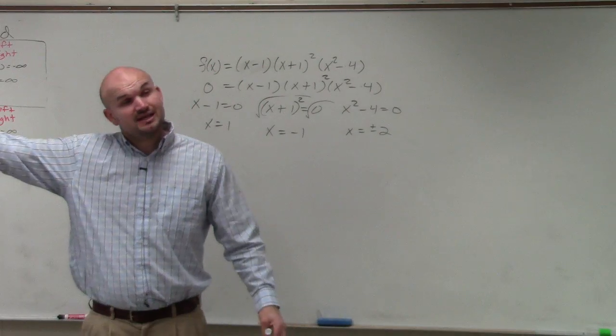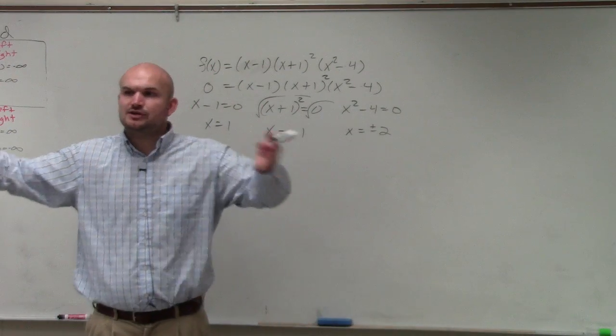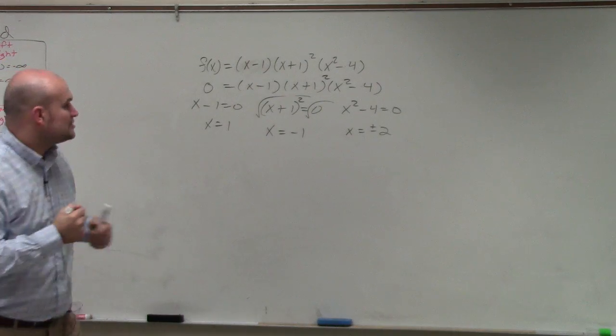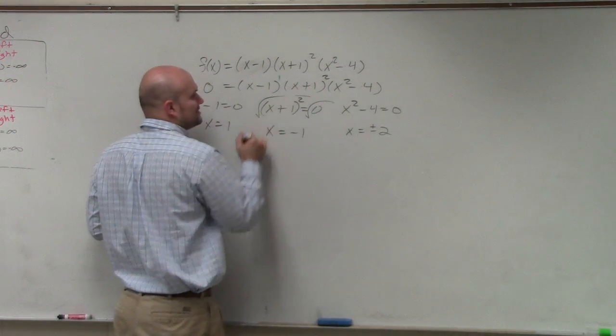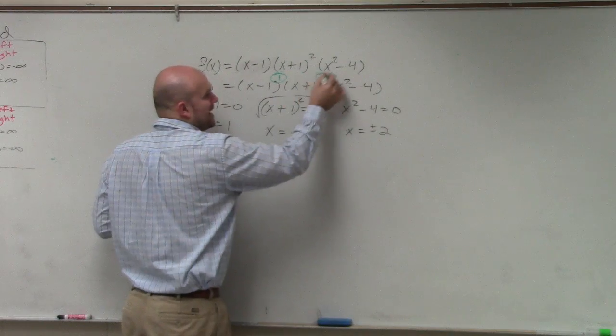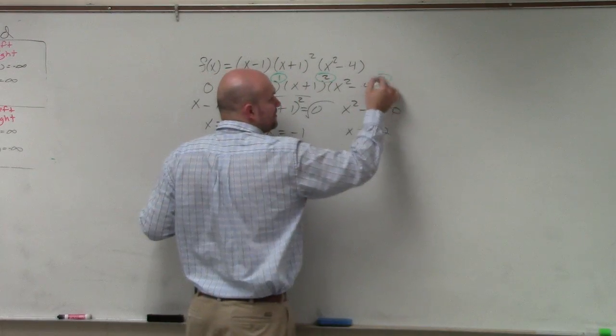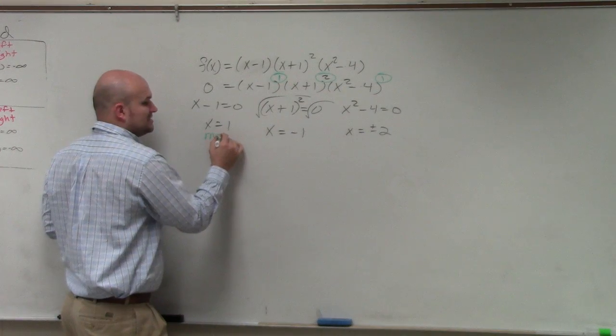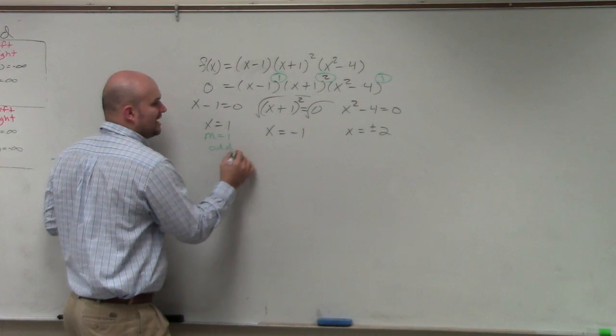Now what multiplicity does is we're going to talk about the multiplicity. Does the graph at each of those x-intercepts, does it cross or rebound? So what we have to do is go back to the factors or the power of the factor and determine what the multiplicity is. Here, the multiplicity is 1. So we'd say multiplicity is equal to 1, which is odd.